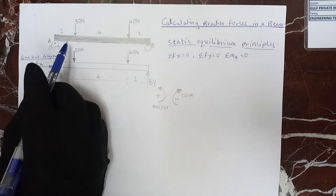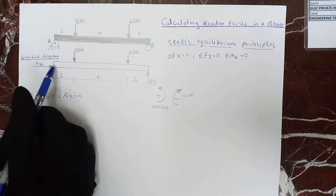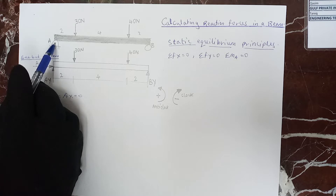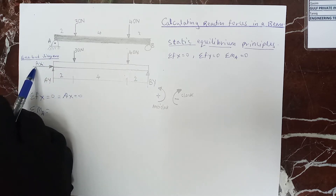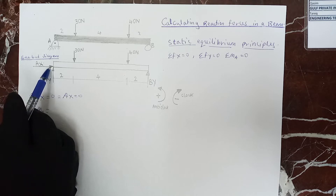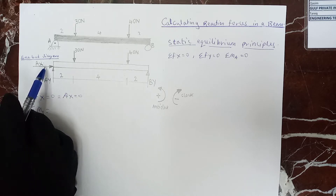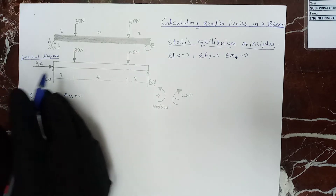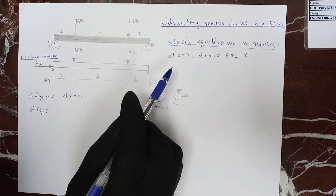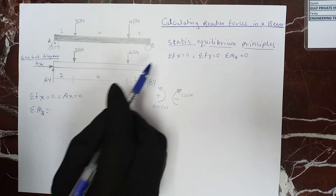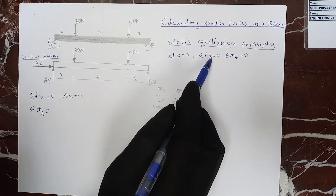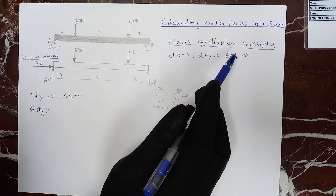We proceed by drawing a free body diagram. We can see the forces acting on it. From the pin support, we put a force OX for the horizontal forces and a vertical force. The principle of static equilibrium means that all forces acting on the horizontal must equal zero, forces on OY must equal zero, and the moment must equal zero. That is the law of static equilibrium.